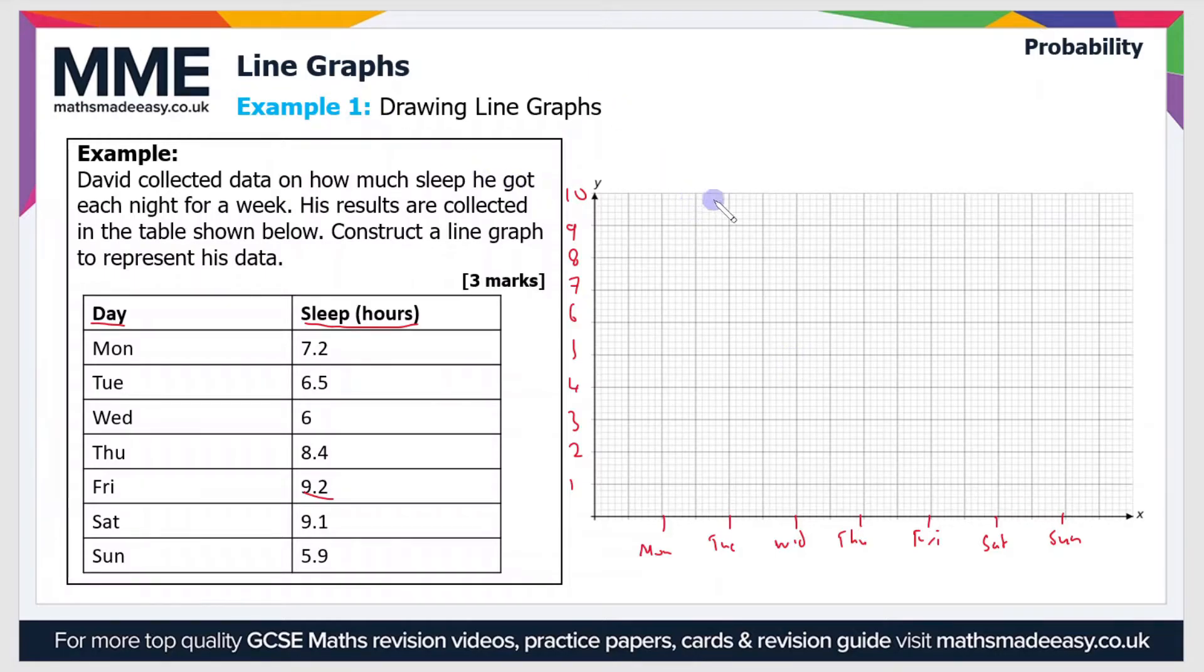So now we have to plot the points. You can see the first point, Monday, that's 7.2 hours of sleep, so that's there. And then Tuesday, 6.5, so we go to 6.5 there. Wednesday, six hours of sleep, so I'll mark that there.